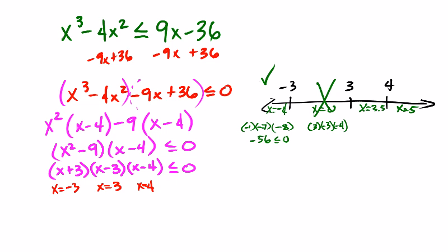When we plug in 3.5: 3.5 plus 3 is 6.5, 3.5 minus 3 is 0.5, 3.5 minus 4 is negative 0.5 — that will turn out to be negative, so we like that, check mark. Then plug in 5: 5 plus 3 is 8, 5 minus 3 is 2, 5 minus 4 is 1 — that's all positive, and we want it to be less than or equal to 0, so that doesn't work.